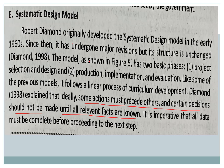The fifth submodel of the linear model is the Systematic Design Model. Some actions must precede others, and certain decisions should not be made until all relevant facts are known. This emphasizes that in making the systematic design model, there must be intensive research to exactly determine what matters should be included in a curriculum. Such making of curriculum must not be done unless all necessary elements and surrounding variables are identified and carefully studied.